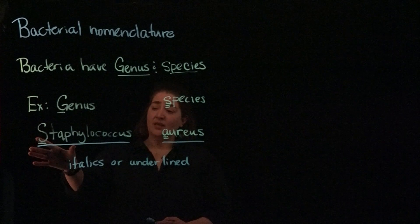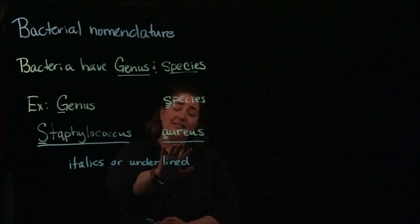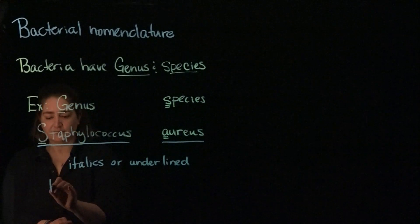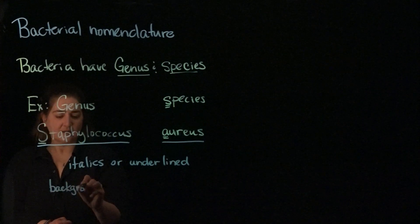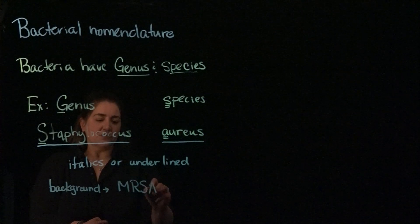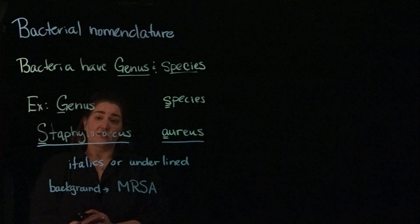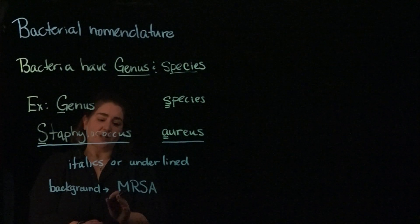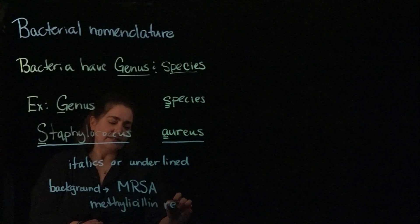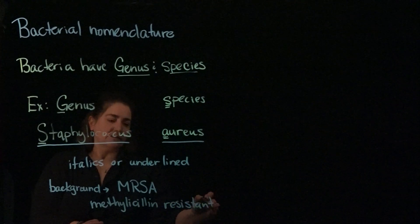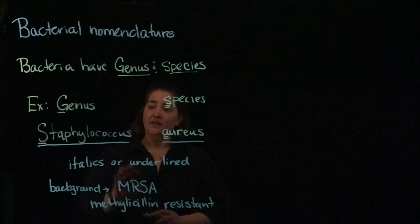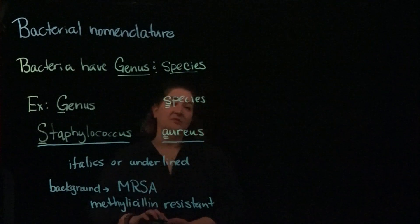We give the genus name first — in this case Staphylococcus — then the species second, which would be aureus. Staphylococcus aureus is the bacteria associated with what you may have heard of as MRSA. MRSA is an acronym — it stands for Methicillin-resistant Staphylococcus aureus. That's the bad bug that circulates in and around hospitals. But to properly present the name, we go genus and species.